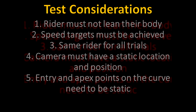While executing the test, I will need to eliminate variables that could impact the data. First, I will ensure that I don't lean my body into the turns — my shoulders should be square with the bike. Second, I must hit the target speeds at the apex of the curve. Third, I must keep only one rider for all the trials to eliminate rider size and weight variances. Fourth, the camera must have a static location and position. Finally, the entry and apex points must be static, as an early or delayed entry or apex point can change the geometry of the curve.